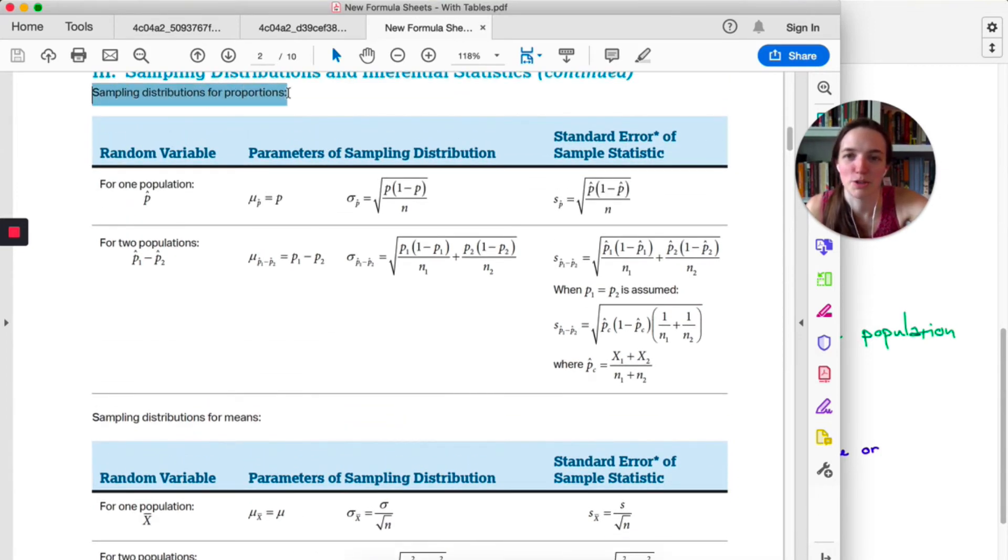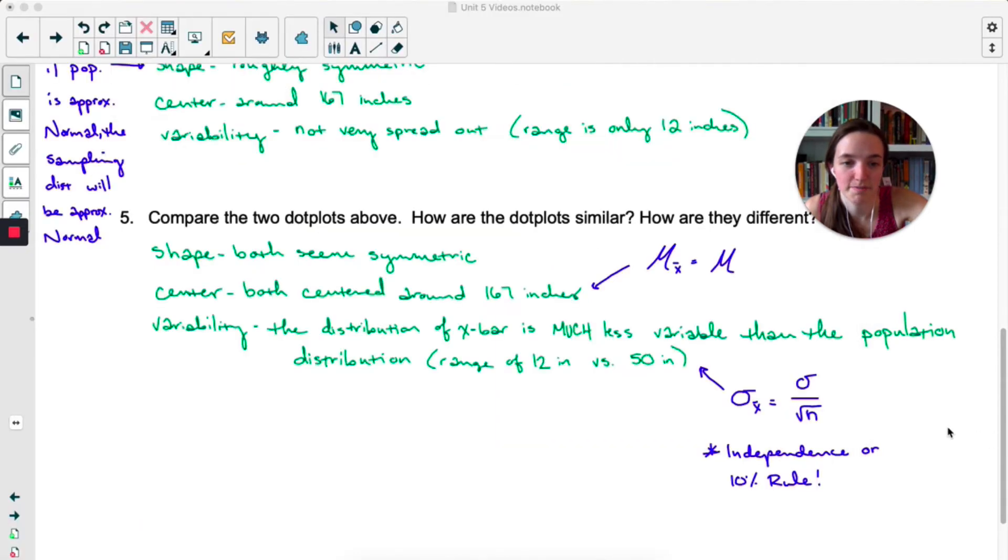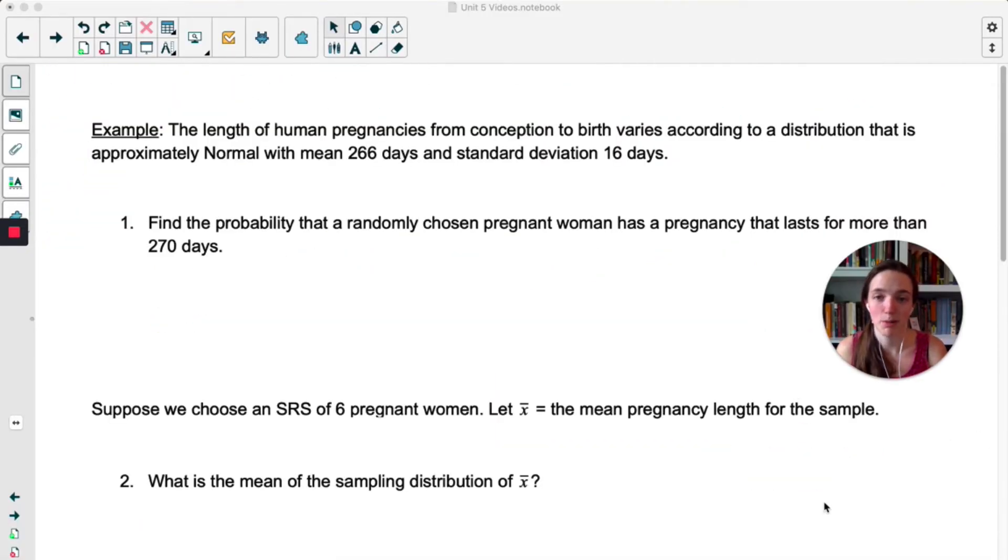Here it says sampling distributions for proportions, one population, there's your formulas. Sampling distributions for means, one population, there's your formulas. We don't need any of this stuff right now. We're just doing the mean and the standard deviation. I think you have everything you need to try this example problem, so why don't you pause the video and see how much you can get through on your own, and then we will recap it together.